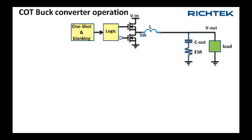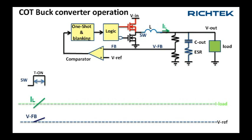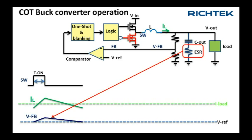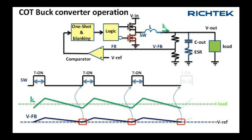A one-shot provides the on-time. A high-speed comparator compares a portion of the output voltage with an internal reference. A fixed on-time is generated and inductor current rises. When the on-time has expired, the low-side MOSFET conducts and inductor current drops. Due to the output capacitor ESR, the voltage ripple on the output has a similar shape as the inductor current. Via the feedback network, this voltage ripple is compared with the internal reference. When it drops below the reference, the one-shot is triggered again and the cycle is repeated, producing a continuous switching signal with an output voltage regulated by the feedback network and reference.